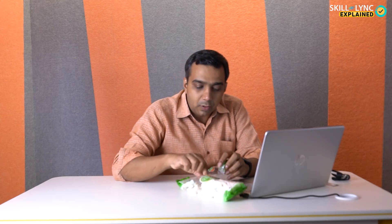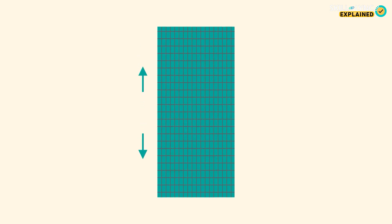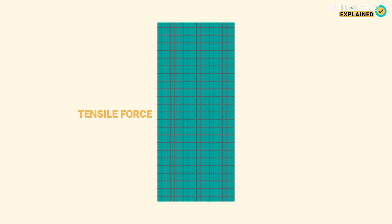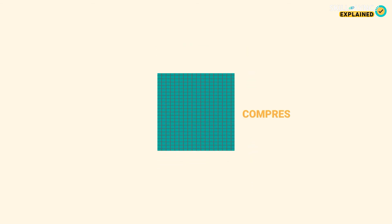If I take this piece of marshmallow and gently stretch it and leave it, it takes its original shape back. And if I gently press it and leave it, it again takes its original shape back. As long as it's able to take its original shape back, it's called an elastic body. Now, if the two forces act against each other when I stretch it, it's called a tensile force. And if the two forces act towards each other, it's called a compressive force.